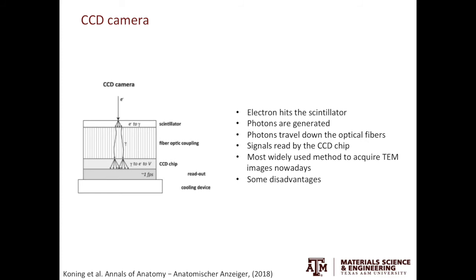Nowadays, CCD cameras are ubiquitous and can be seen on nearly every single TEM. However, there are some disadvantages. In an oversimplified example, when you have an electron beam hitting the scintillator, you have two photons generated and captured by the CCD camera — it's like one pixel getting excited by the electron, but two pixels showing where it's coming from. This degrades the image resolution of your micrograph.